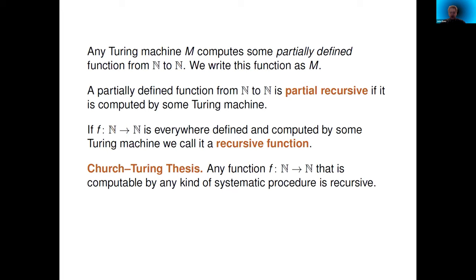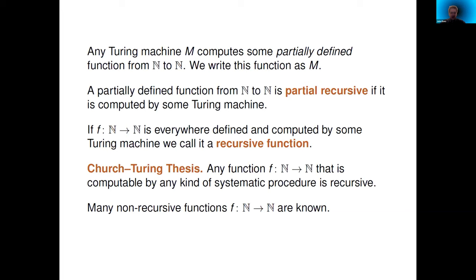This is not the sort of thing you can really prove because 'any systematic procedure' is not a mathematical notion. But people have made up various other concepts of computation and shown that anything those procedures can compute can be computed by a Turing machine. There are also lots of non-recursive functions: there are only countably many Turing machines but uncountably many functions from the natural numbers to the natural numbers, so just a tiny fraction of functions are recursive.